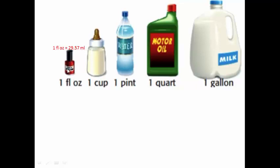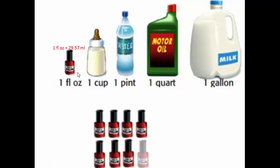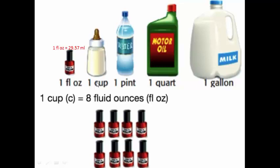If you have this amount — 29.57 milliliters of any liquid — we can change that long expression and call it one fluid ounce. Now, if you have eight fluid ounces — eight bottles each containing 29.57 milliliters — instead of saying eight fluid ounces, we can say one cup. One cup is equivalent to eight fluid ounces.